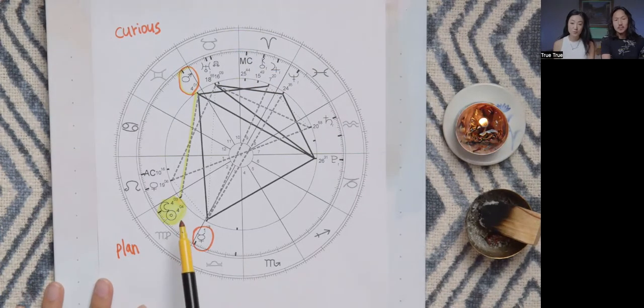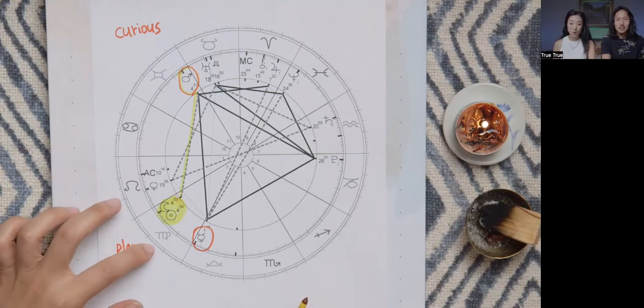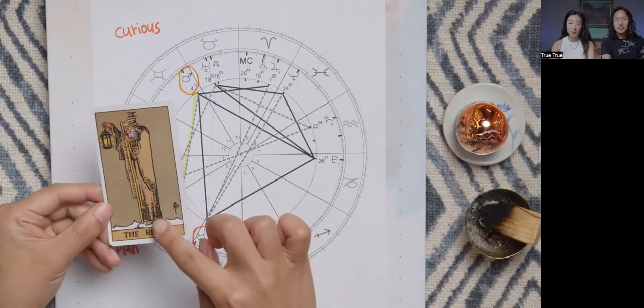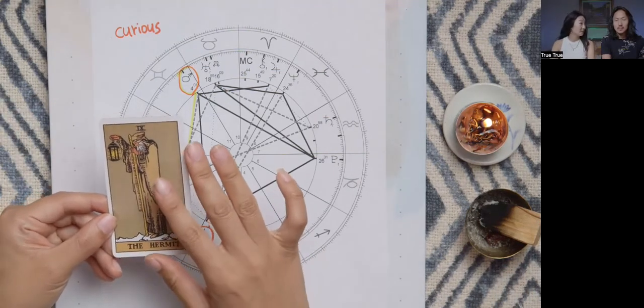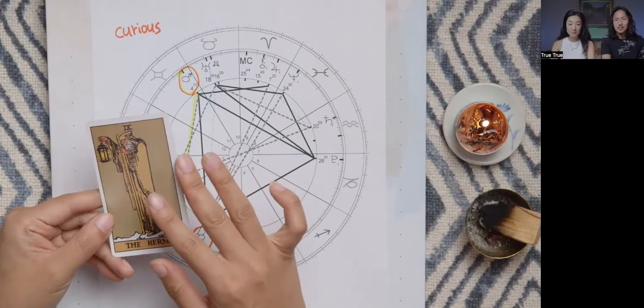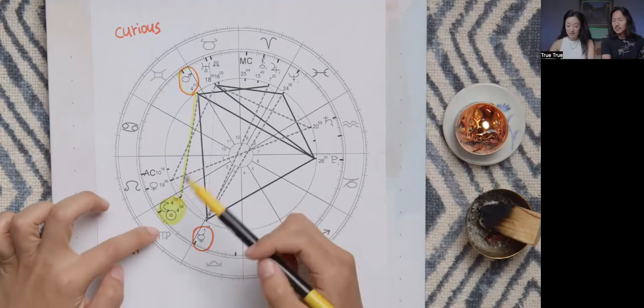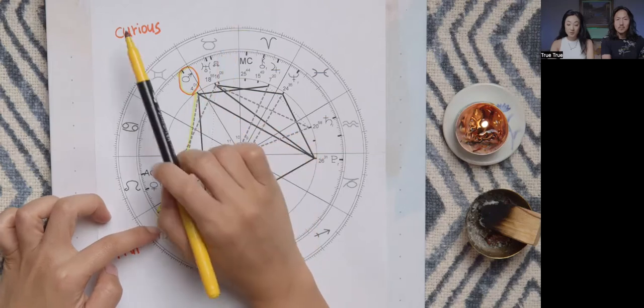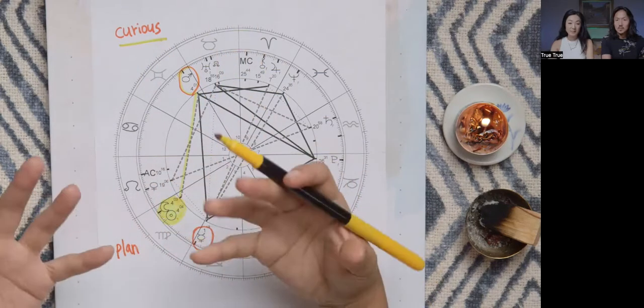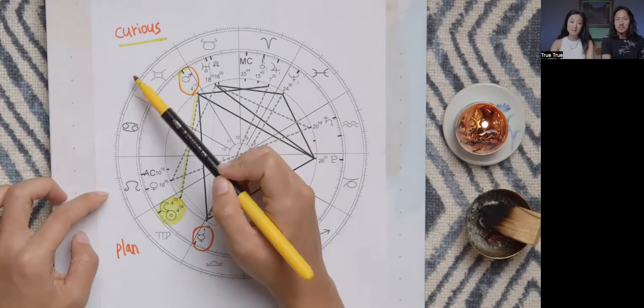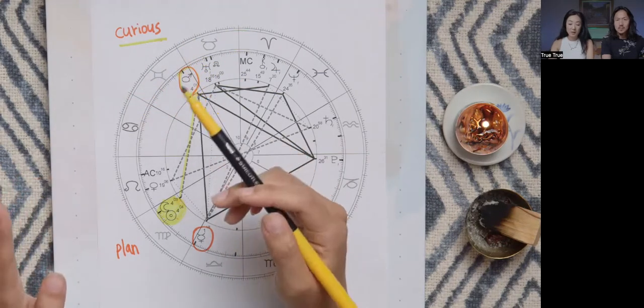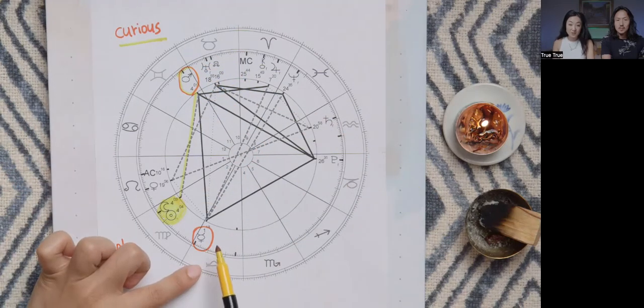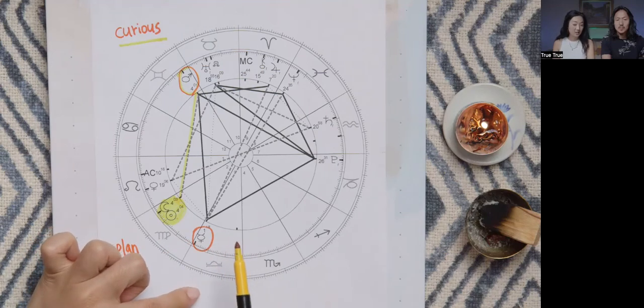This New Moon is a really nice moon to work with because Virgo's corresponding card in Tarot is the Hermit. The Hermit is a light bringer, and you can become a light bringer using this New Moon energy. Work with Mars as Mars explores all the possible situations in whatever you're facing right now.